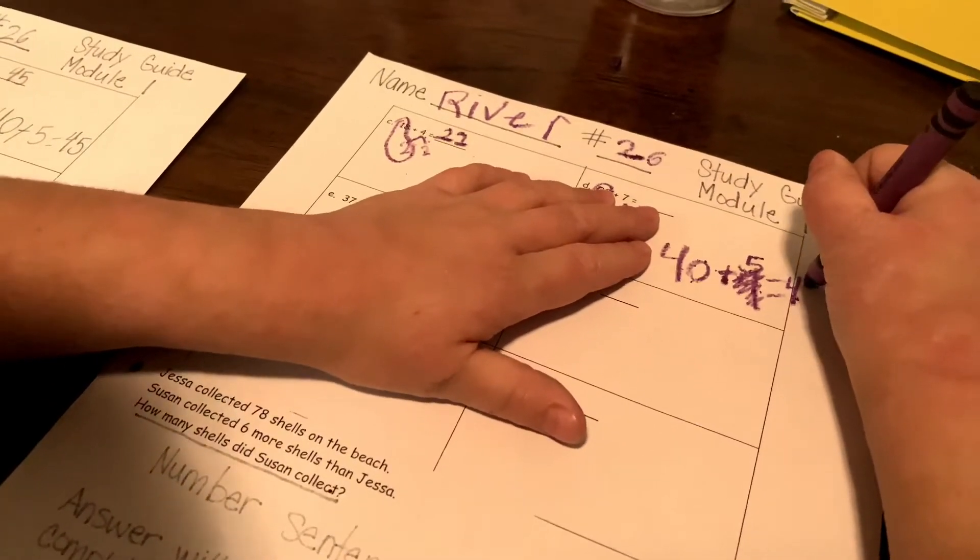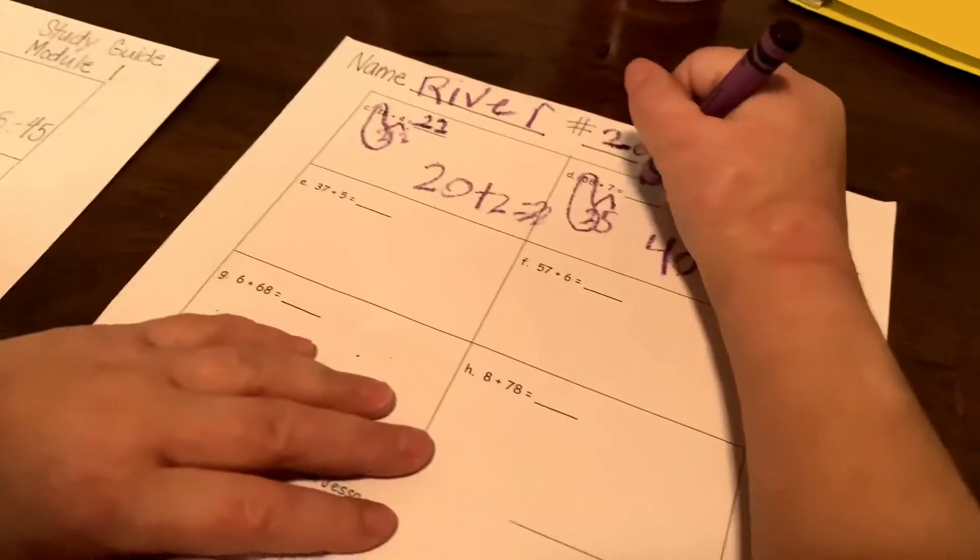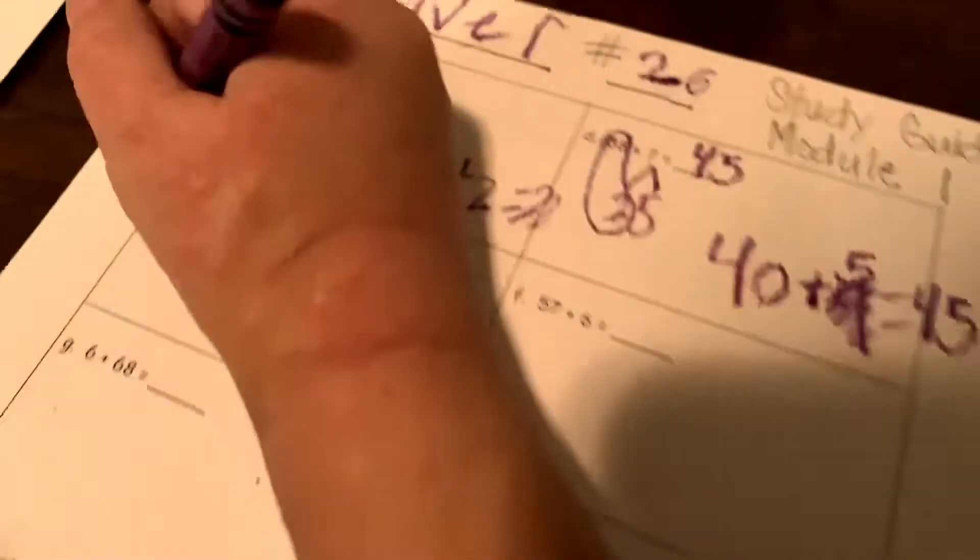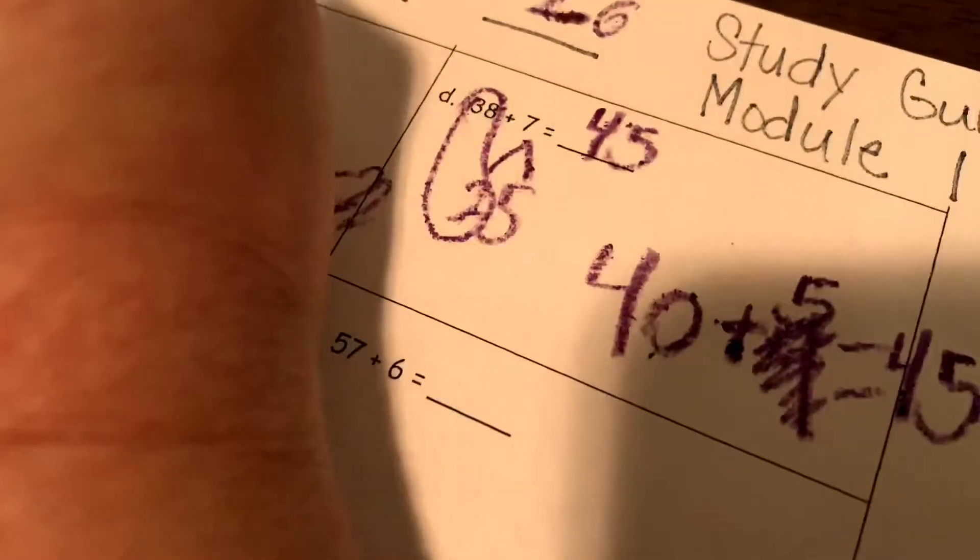So then after you do that equation, then you write the answer in that space, right? So that's how you got 38 plus seven. That's how you Common Core math, River. Give me a big smile. That's my girl.